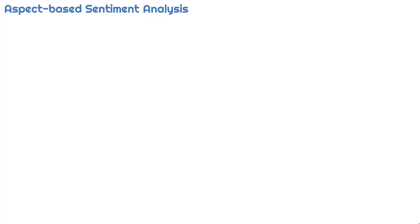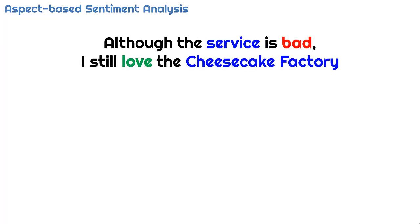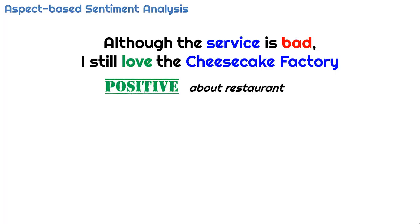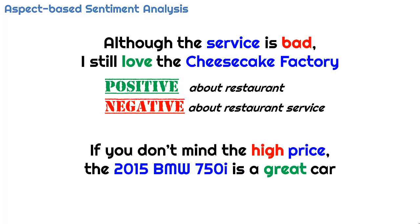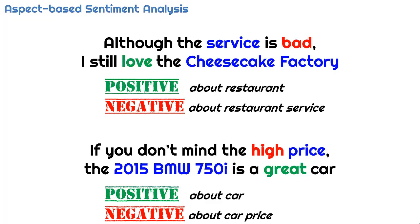Aspect-based sentiment analysis discovers an opinion and its target. 'Although the service is bad, I still love the Cheesecake Factory.' This sentence clearly has a positive tone, but we cannot say it is entirely positive. We can say it is positive about the restaurant, but negative about the restaurant's service. Opinion targets are often described by entities, like restaurant, and their different aspects, like service of the restaurant. 'If you don't mind the high price, the 2015 BMW 750i is a great car.' This is positive sentiment about the BMW, but negative about its price.